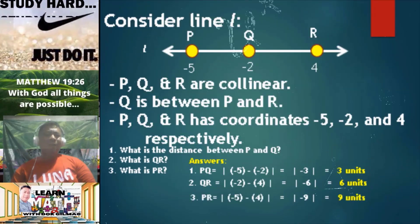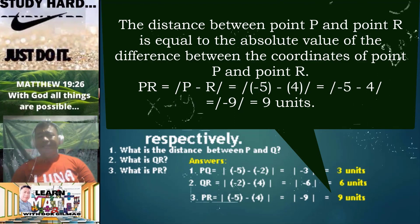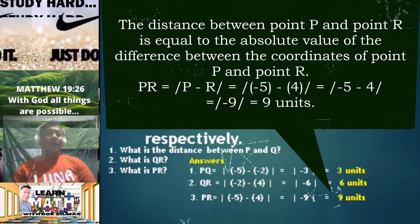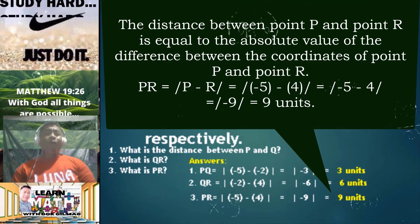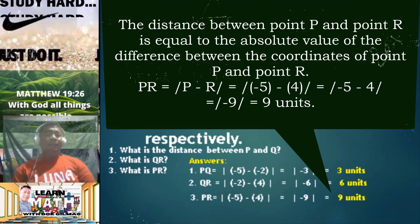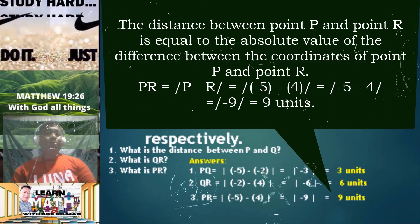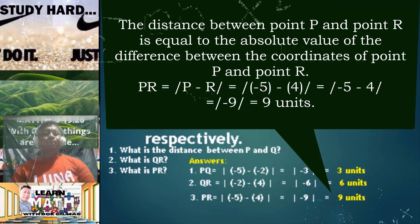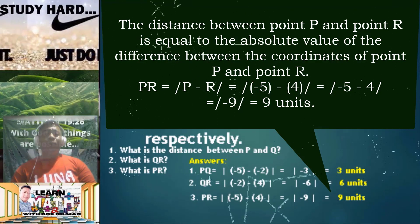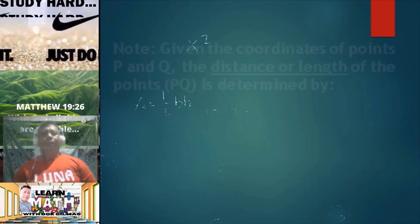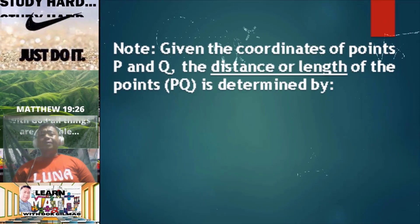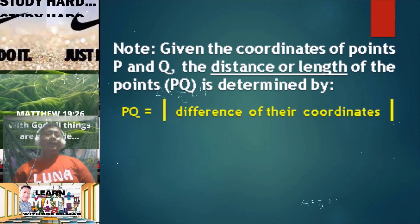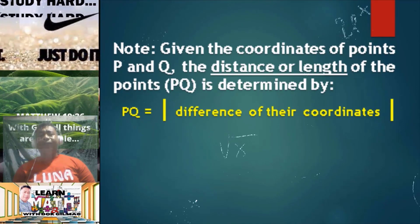Number 3: What is the length of segment PR? If we are to determine the length of segment PR, we simply get the absolute value of the difference between P and R. That is, the absolute value of negative 5 minus 4, which is just equal to the absolute value of negative 9. Simplifying further, it is simply equal to 9 units. Take note: given the coordinates of points P and Q, the distance or length is determined by the absolute value of the difference of their coordinates.